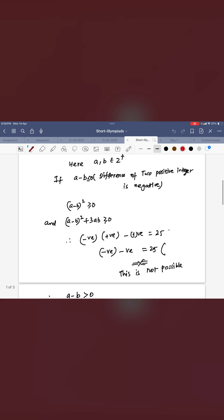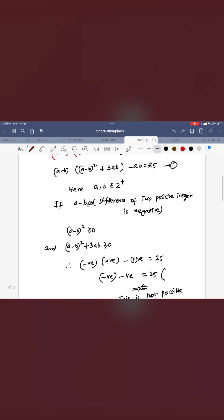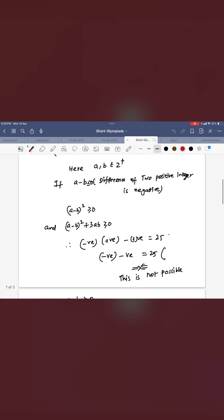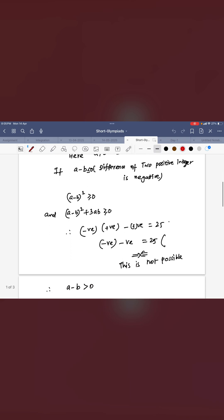You can see (A - B)² > 0, and adding 3AB also > 0. The whole expression on the left side is negative, right side is 25. Definitely this is not possible.